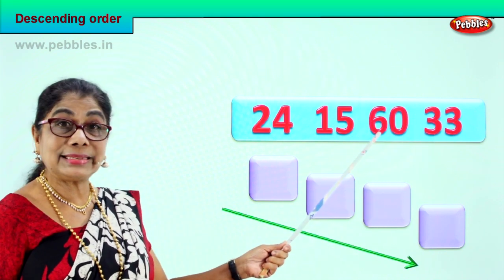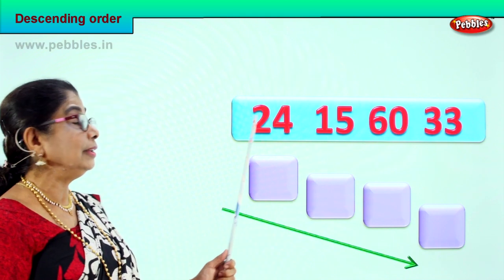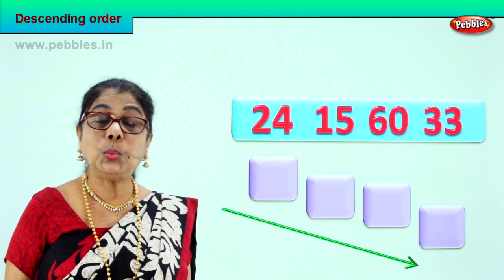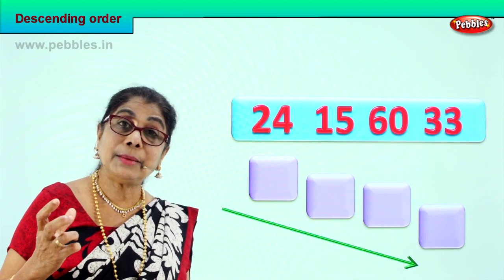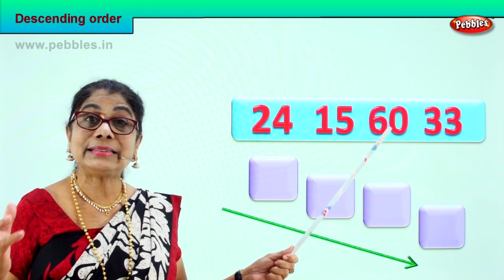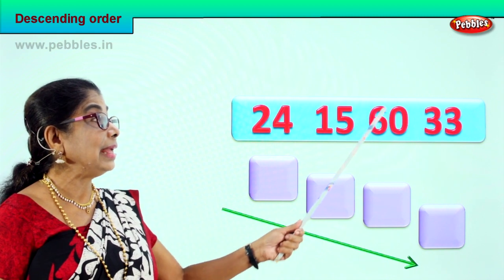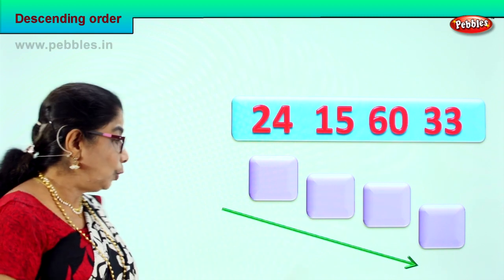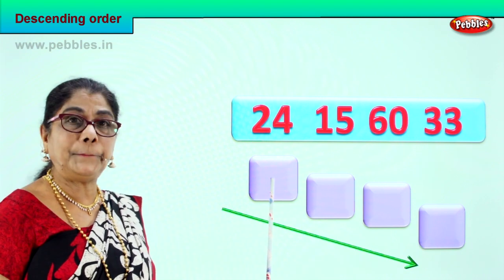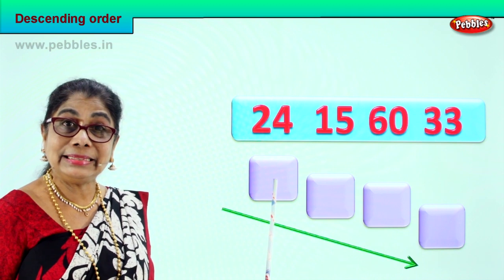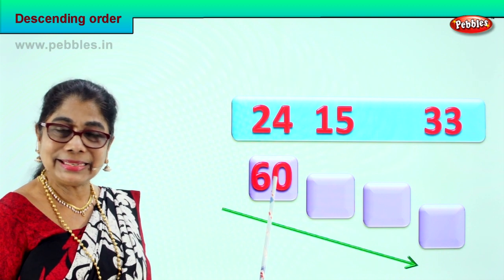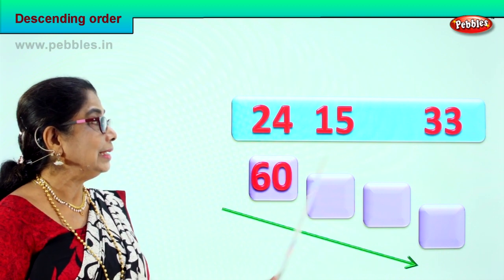So we have three tens, six tens, one ten, two tens. Among all of these, which number has the highest number of tens? Sixty has six tens — that's the biggest number. We are doing descending order, so we need to put the biggest number first. We take sixty, six tens, and put it to the top.